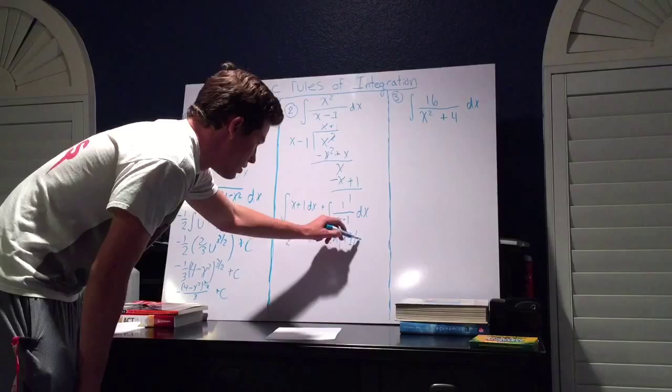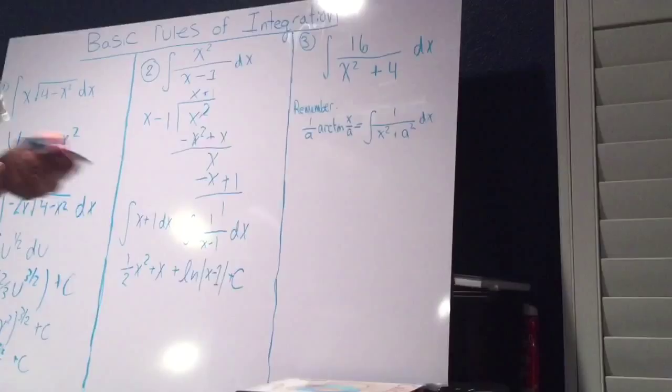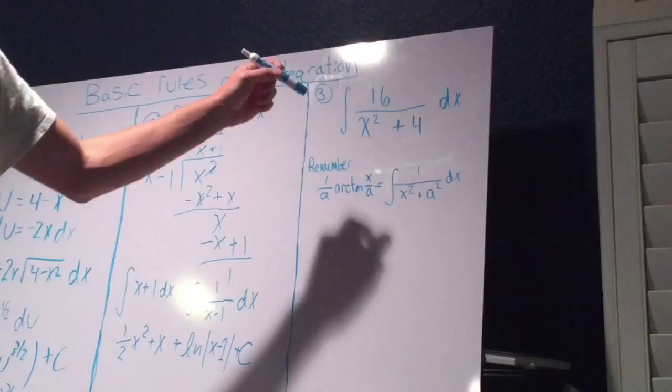And that's how we do our second problem. For our third example, we're going to be looking at the integral of 16 over x squared plus 4 dx. Now we must remember what our arctan parent looks like. 1 over a arctan of x over a is equal to the integral of 1 over x squared plus a squared dx.